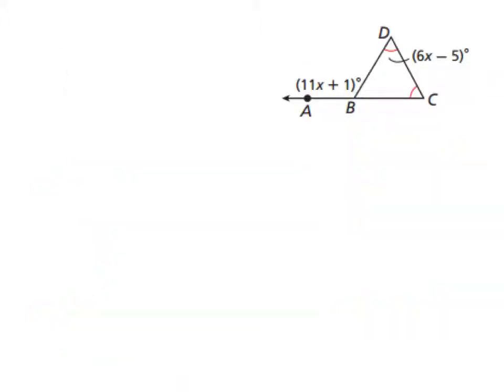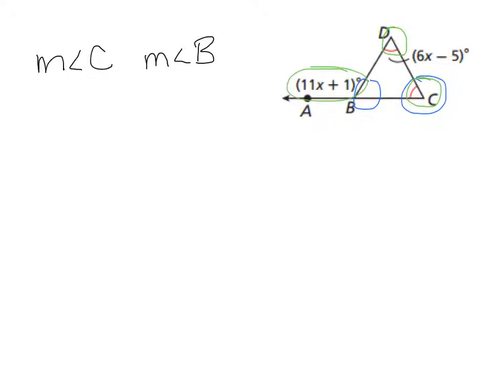For this image, we were tasked with finding the measure of angle C and the measure of angle B. The measure of angle C lives right there, and the measure of angle B is that one right there. Looking at the picture, we have an exterior angle again, so we can use the idea that the two far interior angles, D and C, are equivalent to that exterior angle. Since D and C are the same — they have those little angle marks showing they're congruent — if we add them we have two of the same thing. So the algebra gives us 2 times (6x minus 5) equals the exterior angle, which is 11x plus 1.